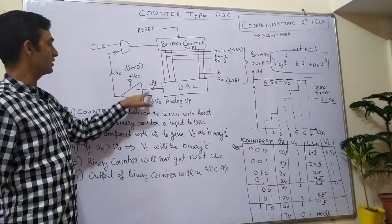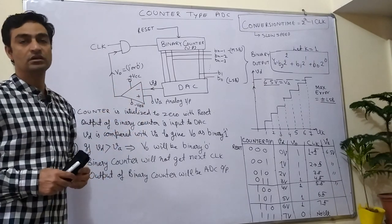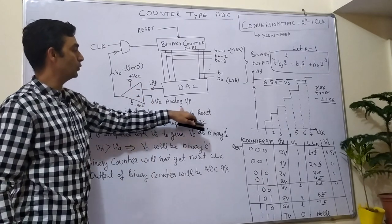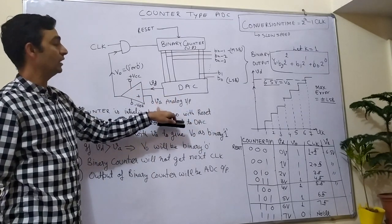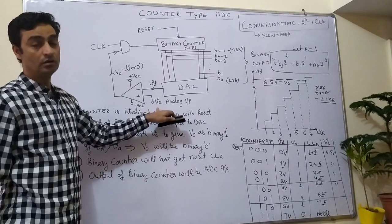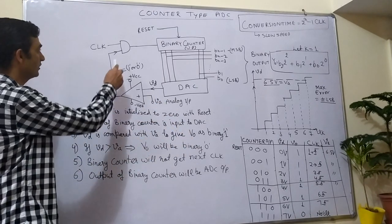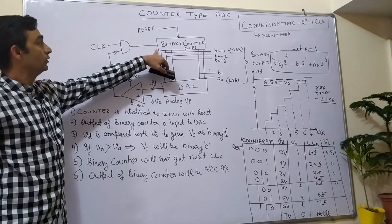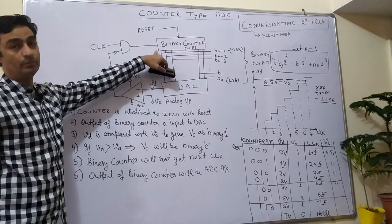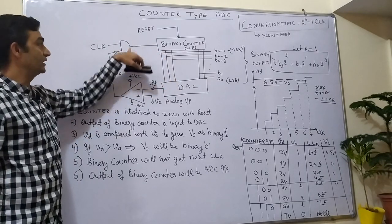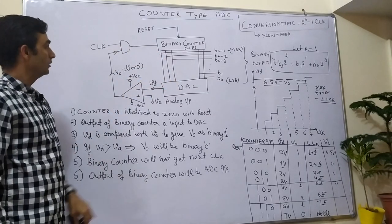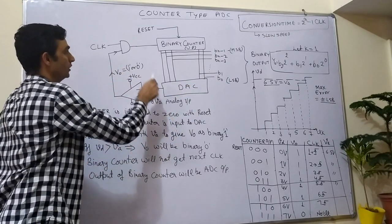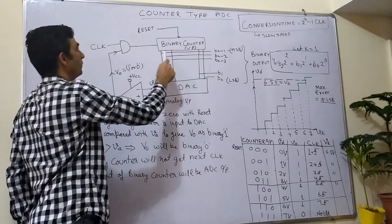This is the comparator circuit. Its job is to compare the two input signals VD and VA, where VA is the analog input signal applied to the ADC. There is also an AND gate — the clock given to the binary counter is ANDed, making it a gated clock. So the components are: AND gate, comparator, digital to analog converter, and binary up counter.